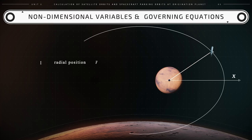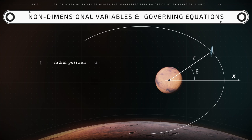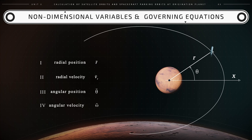The first is the position lowercase r, that is the distance between the center of mass of Mars and the center of mass of the spacecraft. The second is the radial speed vr, that is the speed of the spacecraft in the radial direction. The third is the angular position theta. And the fourth is the angular speed omega, that is the rapidity with which the angle theta varies with respect to time.